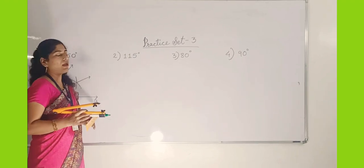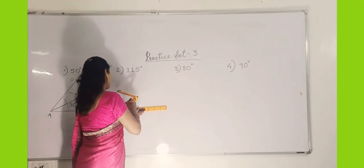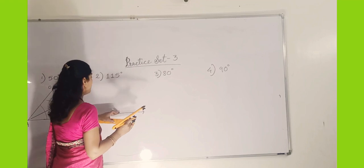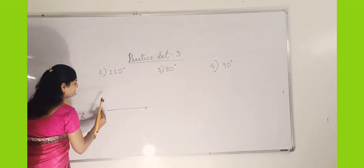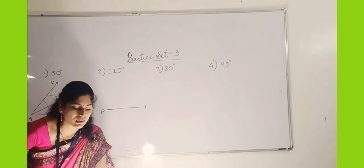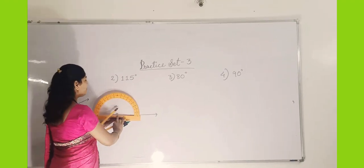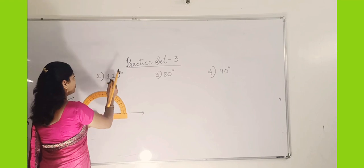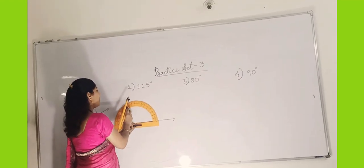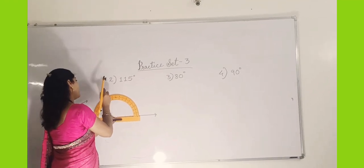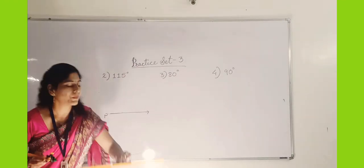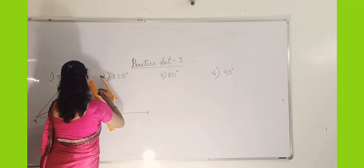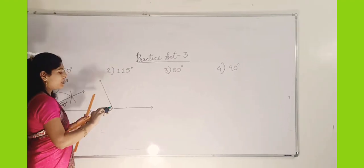For the 150-degree angle, again we will take the ray and give the point the name P. Again we will take the protractor. What we will do — place the midpoint on the end point of the ray, that will be the vertex of the angle. We will look for 150 degrees on the protractor — that is between 110 and 115... here at 115. We will take the scale and join the endpoint of the ray to that point at 150 degrees.